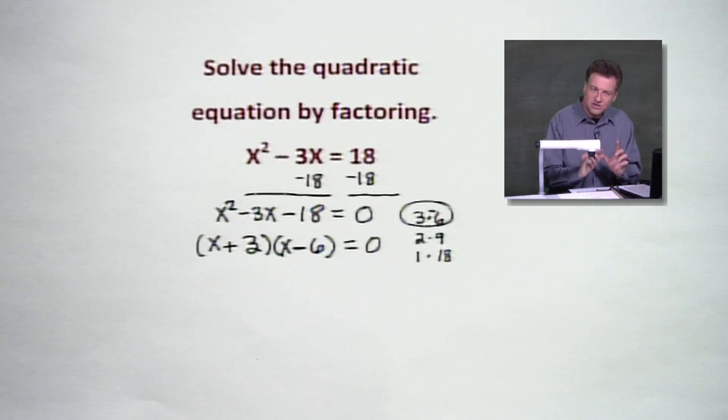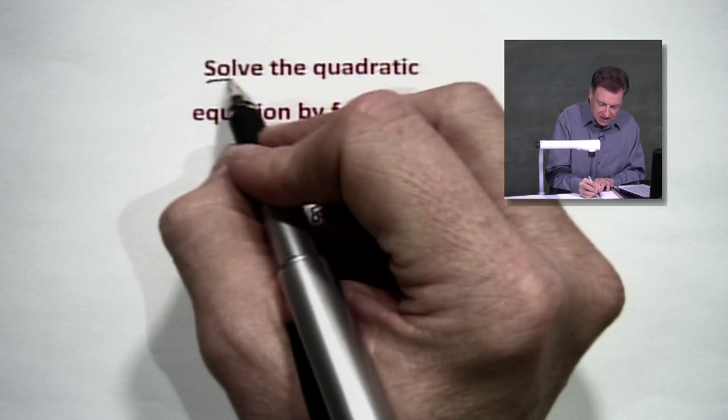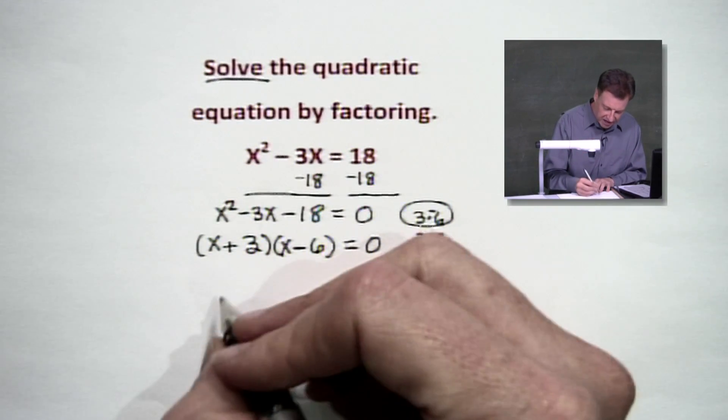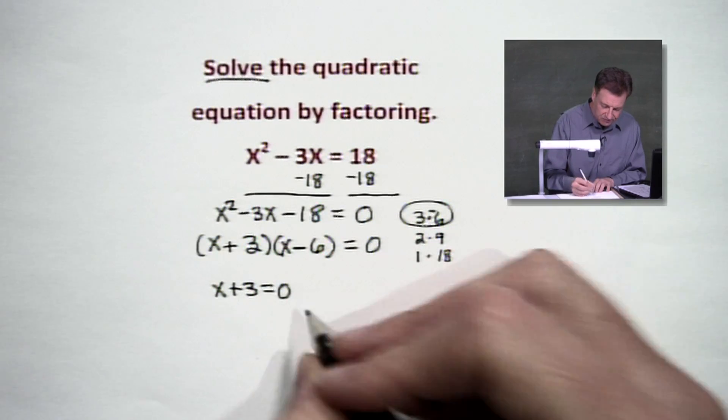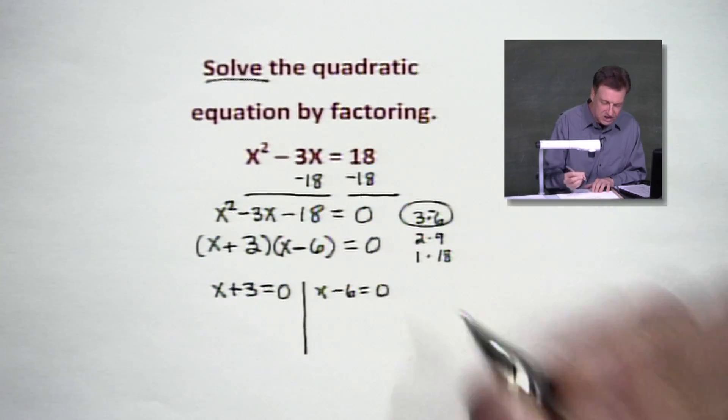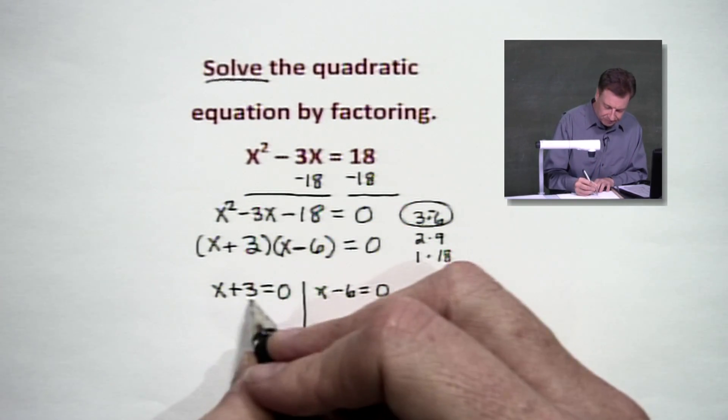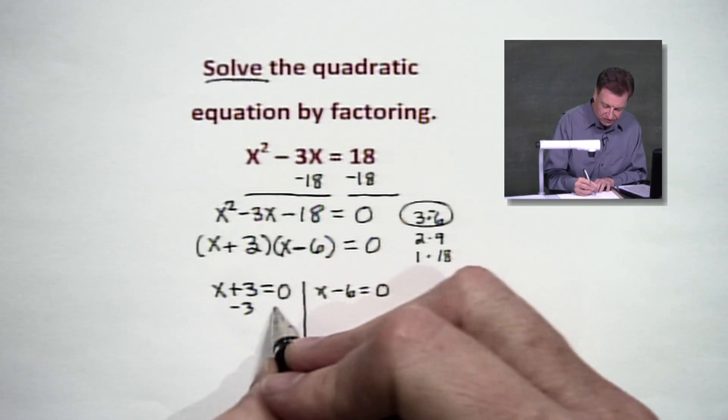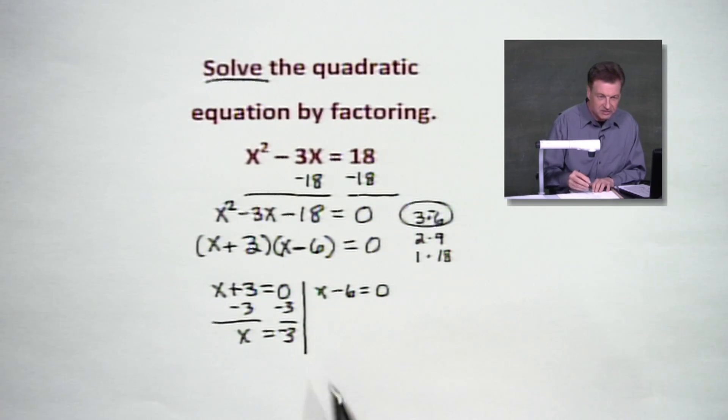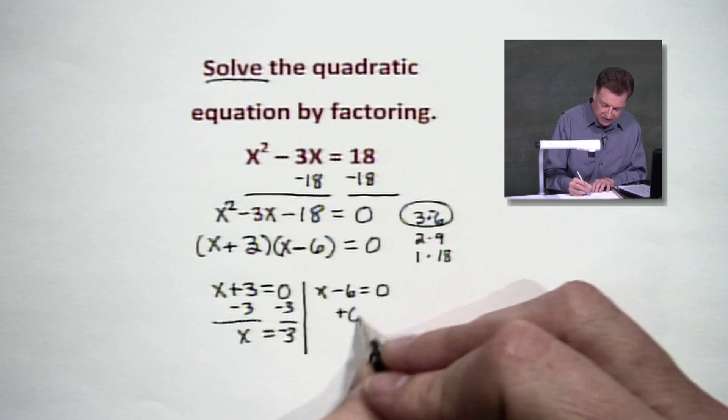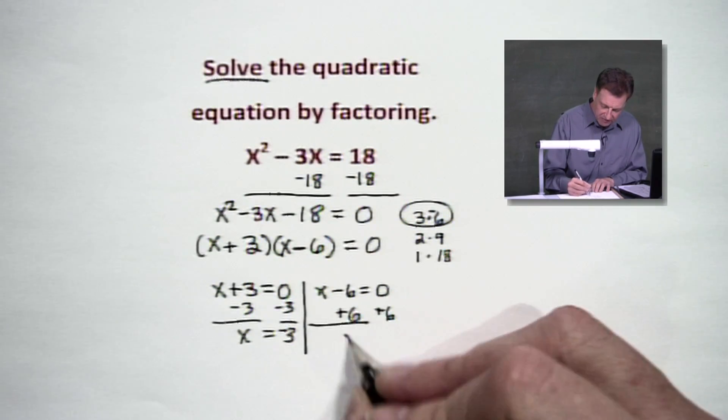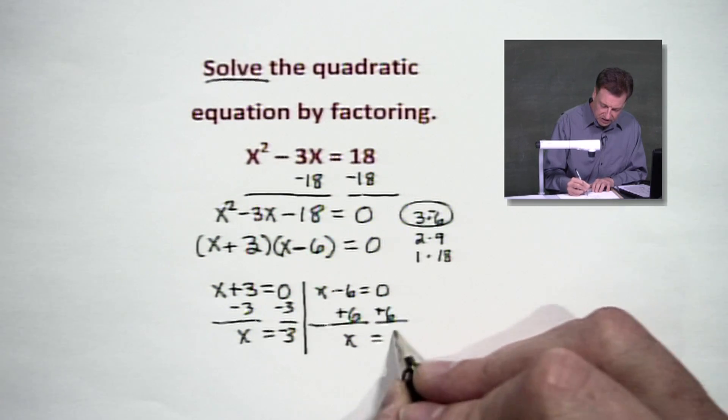Now, we're not done yet. We have factored. But now we've got to do the second part of this problem, which says solve it. So here we go. We've got x plus 3 equaling 0. And down the other side, x minus 6 will equal 0. And we're going to test the waters. If we subtract 3 both sides, we have x equaling negative 3. That looks good. On this side, if we add 6, because it's a negative 6, so we're going to add that, we're going to have x equaling to positive 6.